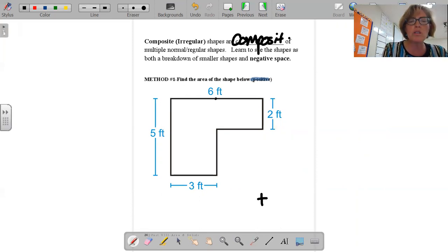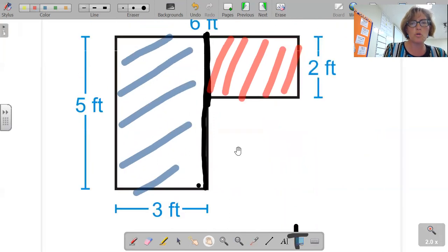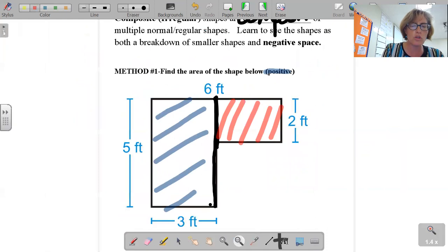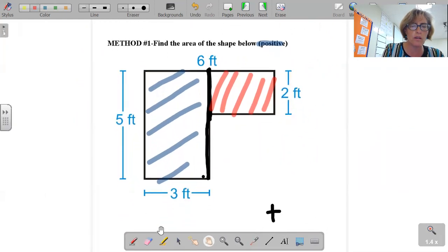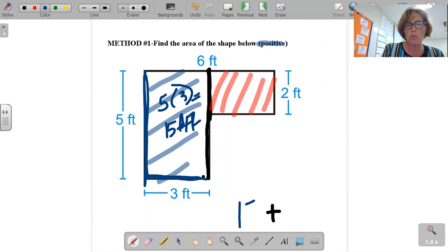So we're going to go ahead and we're going to split this up into rectangles. There's a couple ways to do that. Just always physically trace the sides of everything. Physically trace the sides of everything. Taking a look here, this is length times width, of course. That's going to be 15 feet squared.